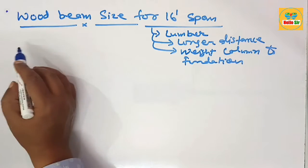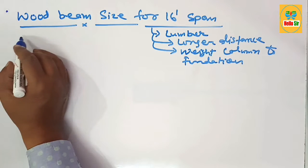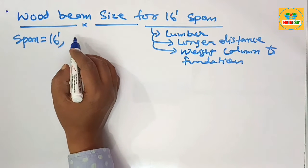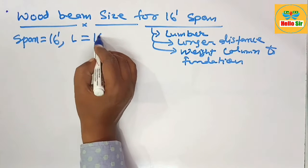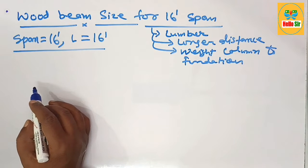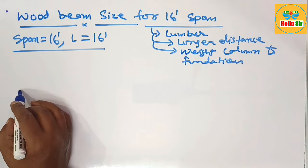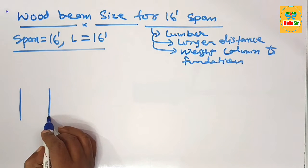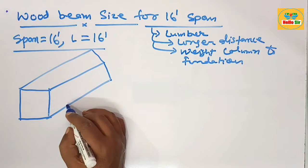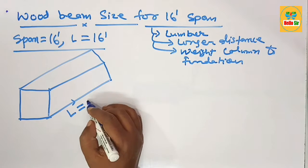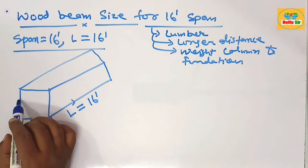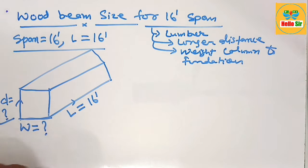Here we find the correct wood beam size for a 16-foot span. The given span length of the beam is 16 feet. We need to understand the depth and width of the required wood beam. A rough diagram shows the length of 16 feet, the width section, and the depth section of the beam.